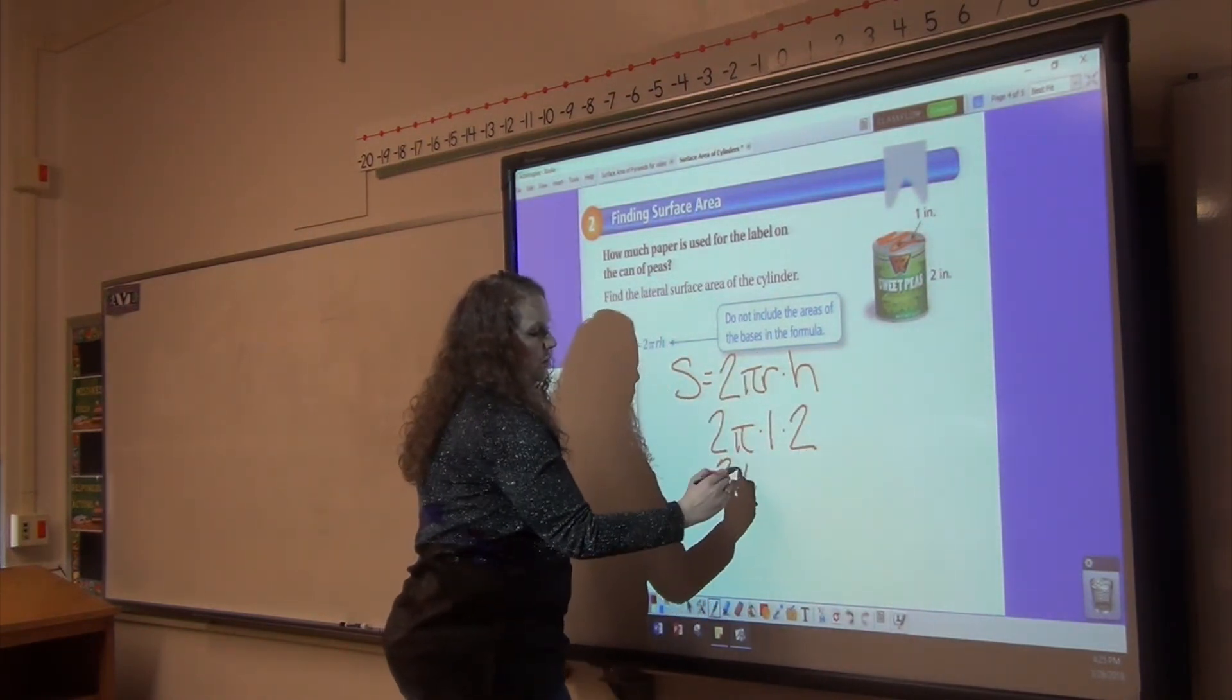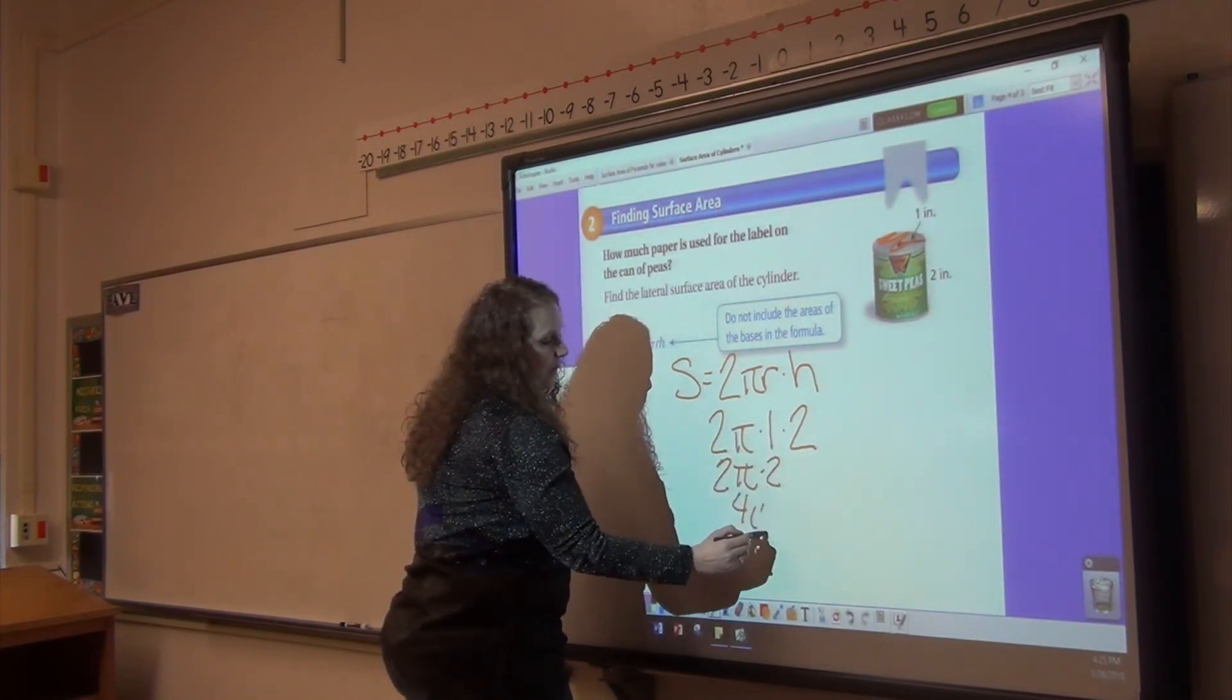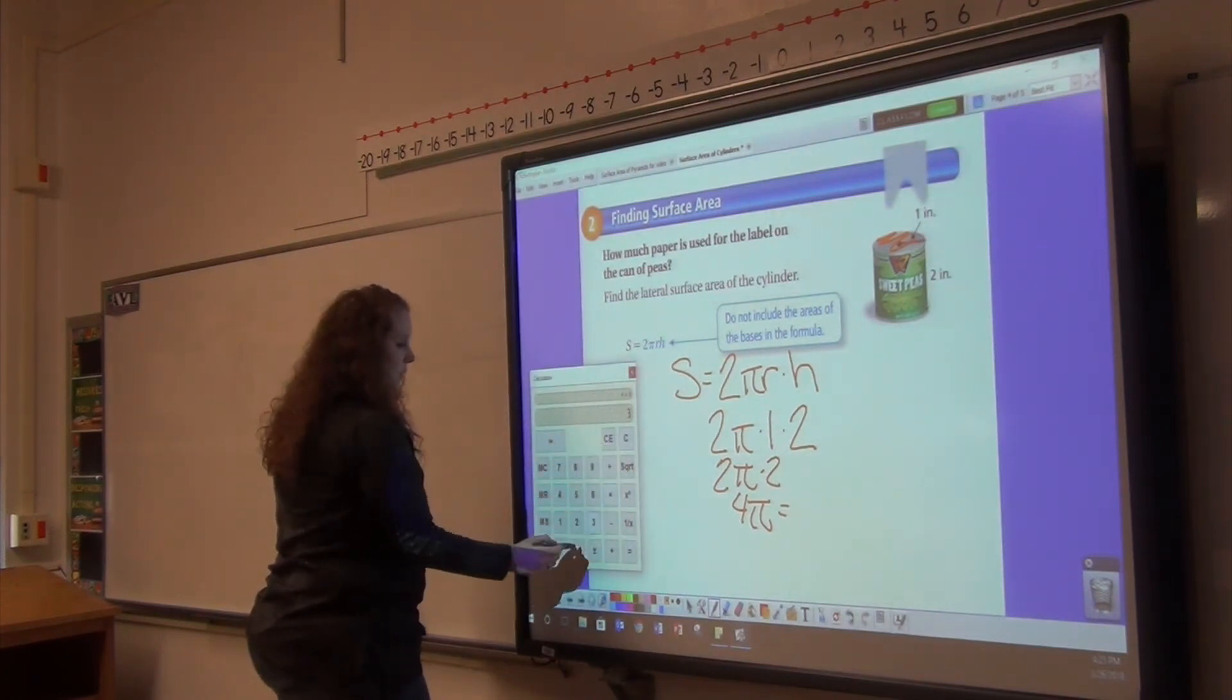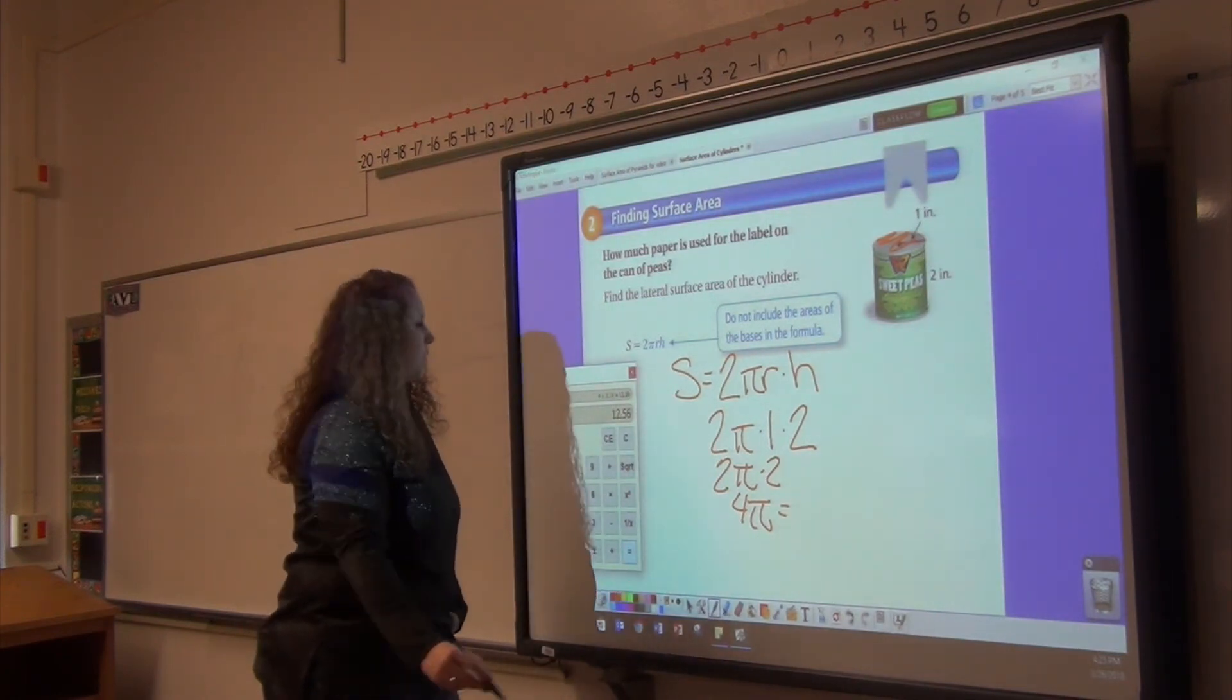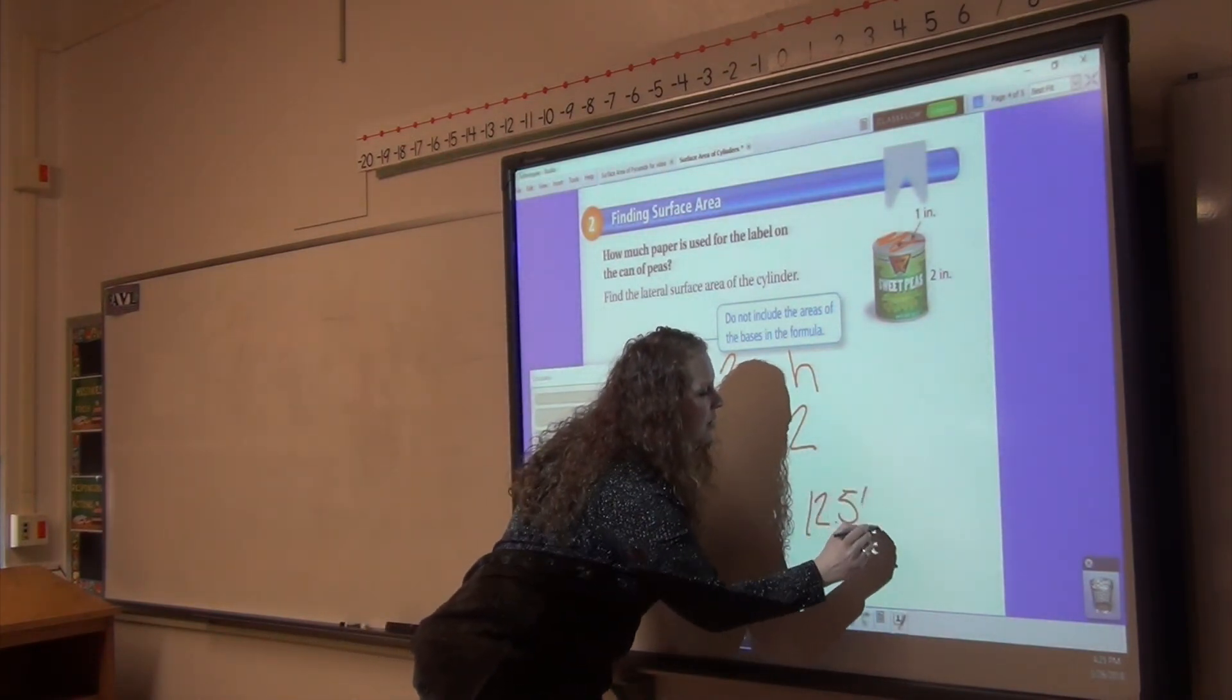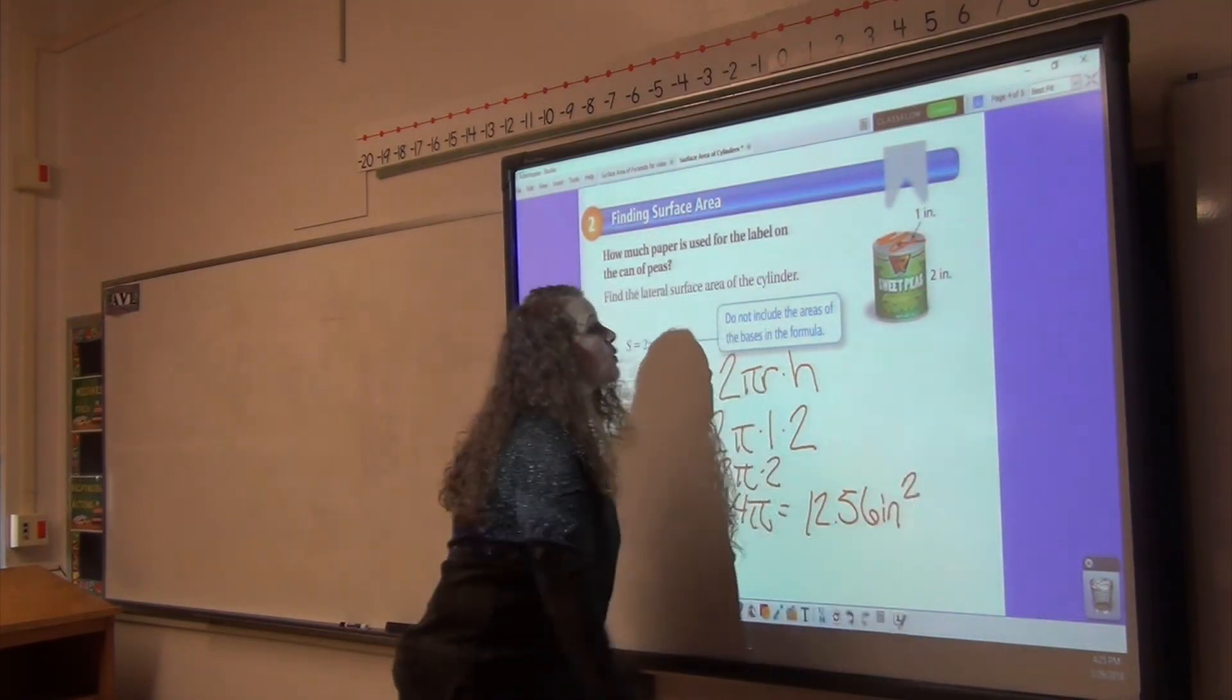So we have 2π times r times h. 2π times 1 times 2, 1 times 2 is 2. So we've got 4π, which equals—we are going to once again use 3.14—4 times 3.14 is 12.56, and it is in inches, and it is in area, so it is squared.